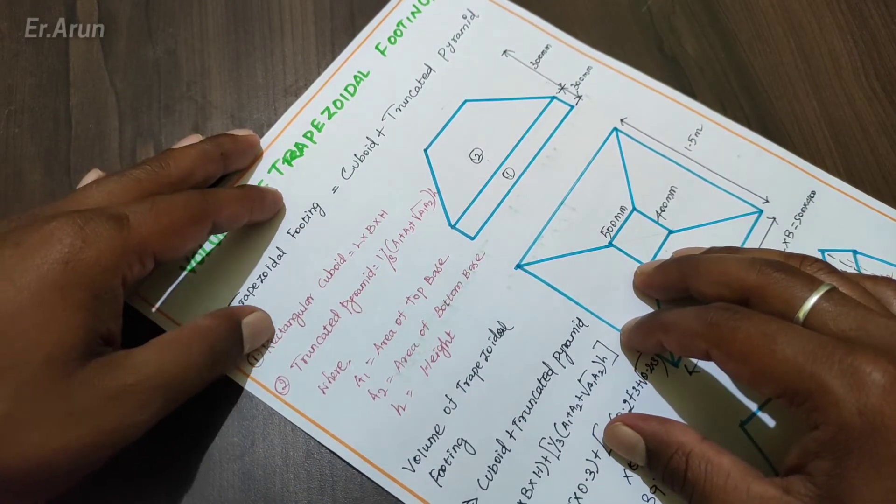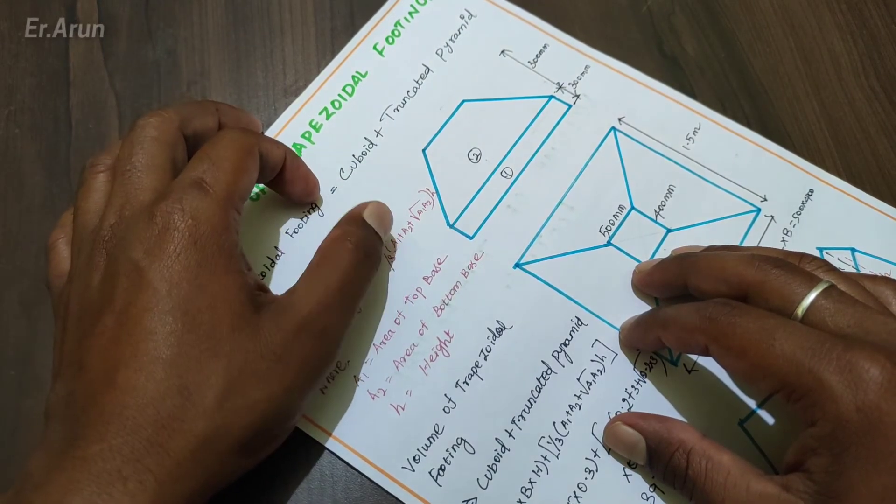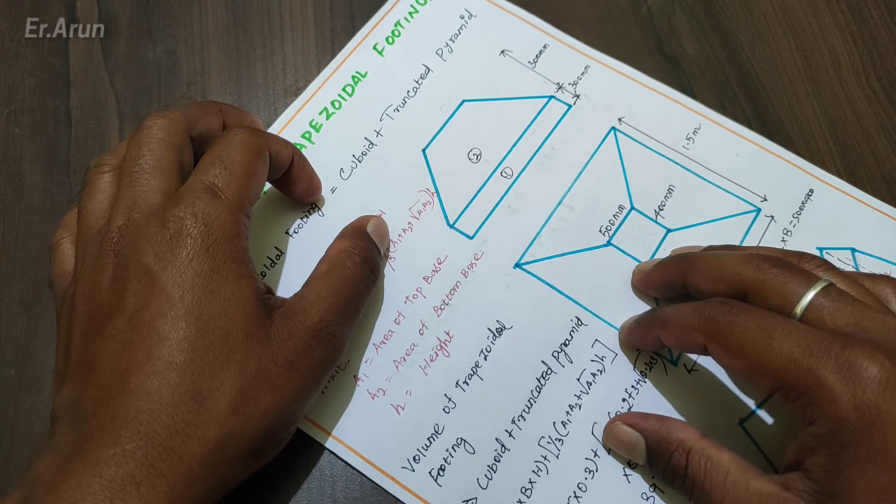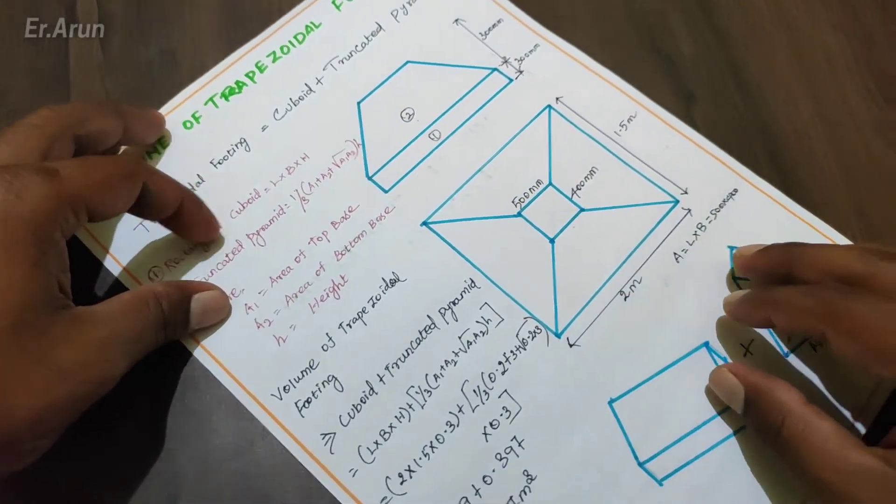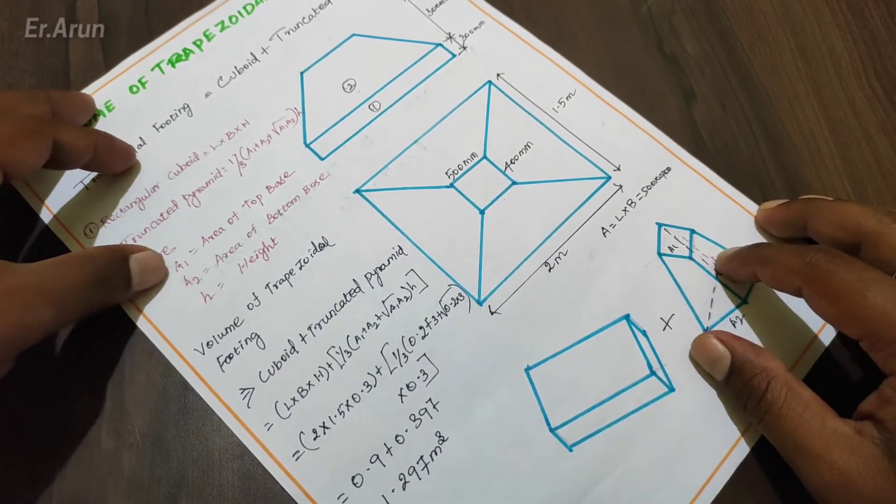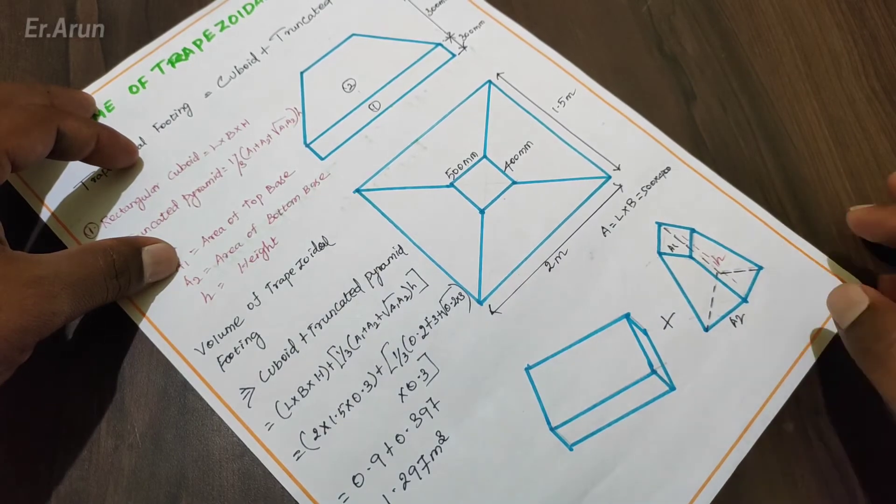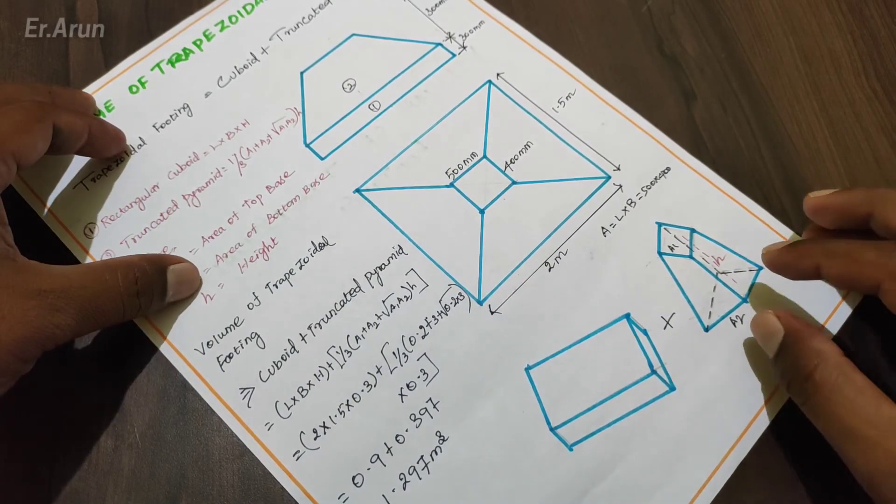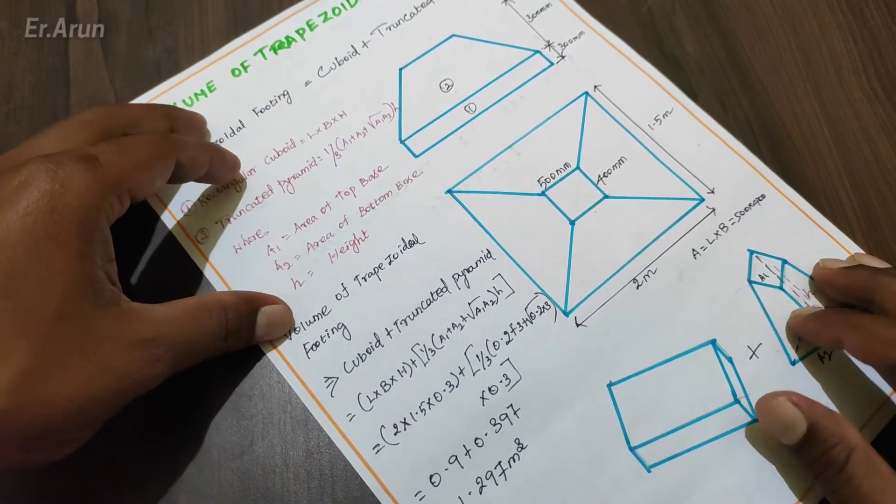That is the truncated parameter: 1/3 into (a1 plus a2 plus root of a1 into a2) into h. Here we have the top base and the bottom base. Here we have the height, 300 mm. Next, we will apply the values in this formula.